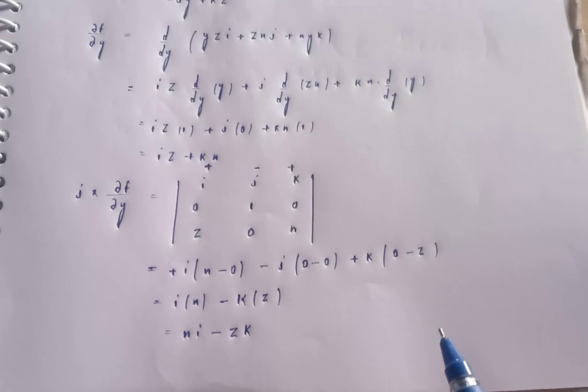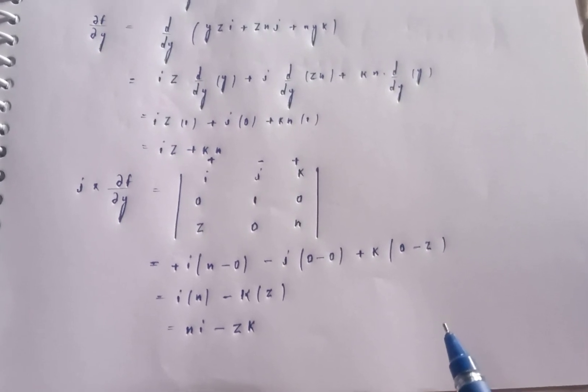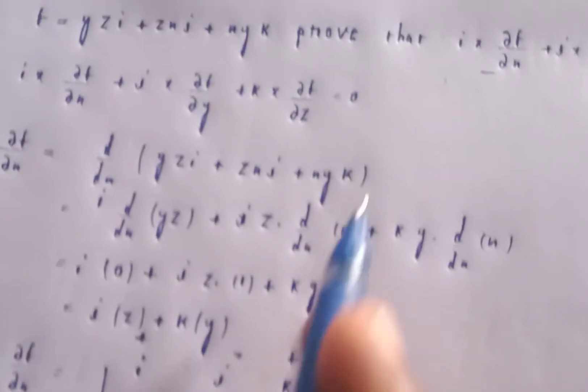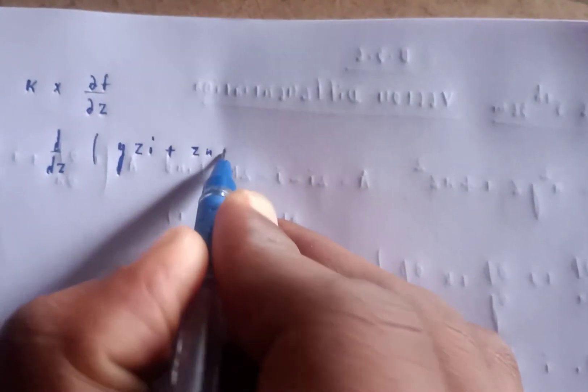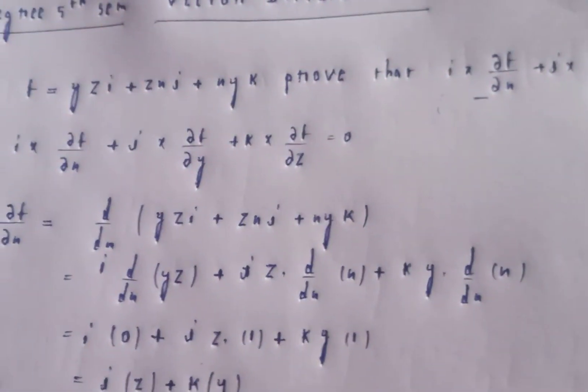Now compute k cross ∂f/∂z. Taking d/dz of f, that is d/dz of yzi plus zxj plus xyk. With respect to z: d/dz of yz equals y for the i component, d/dz of zx equals x for the j component.